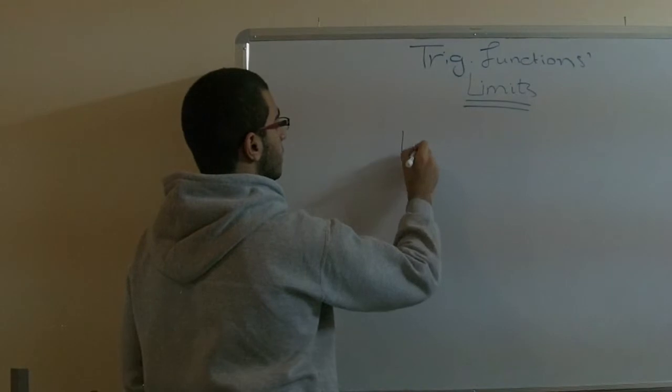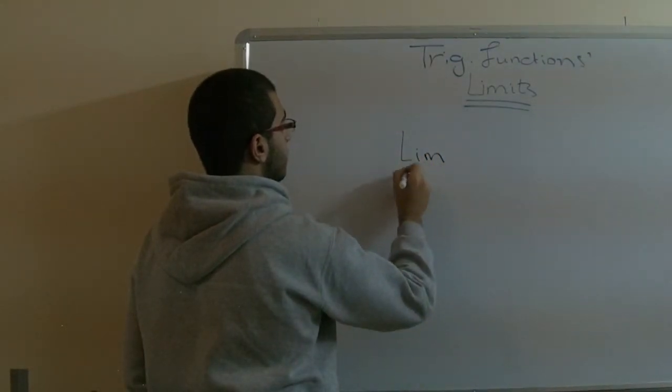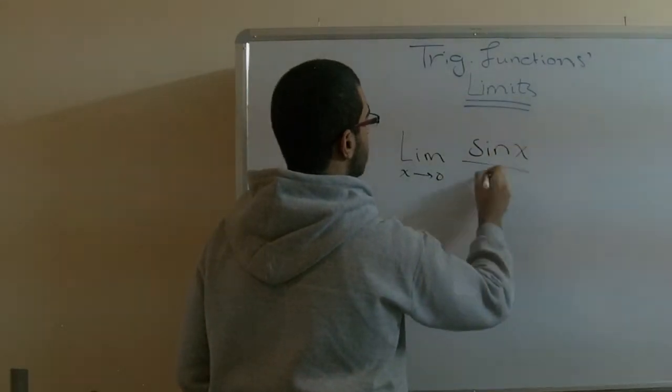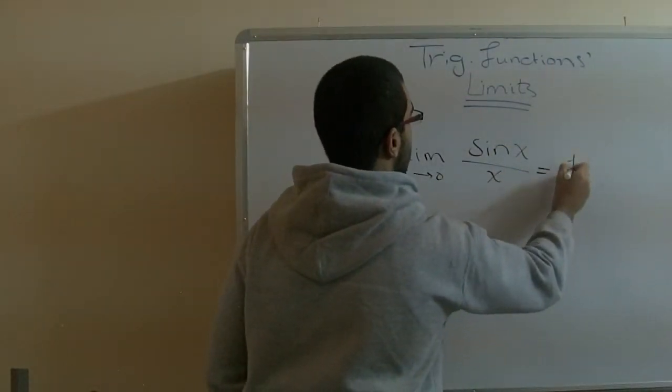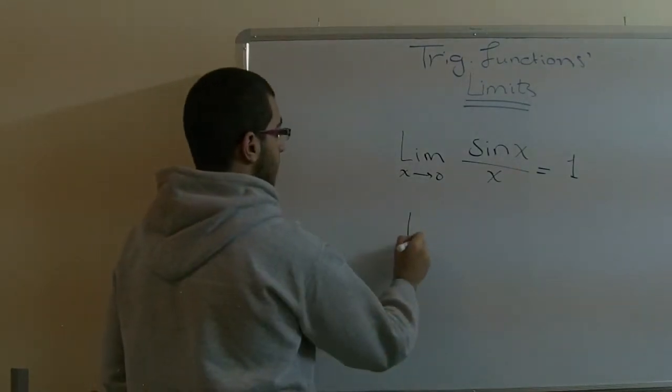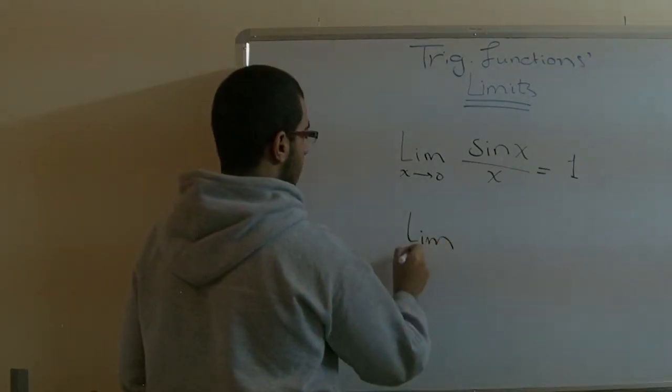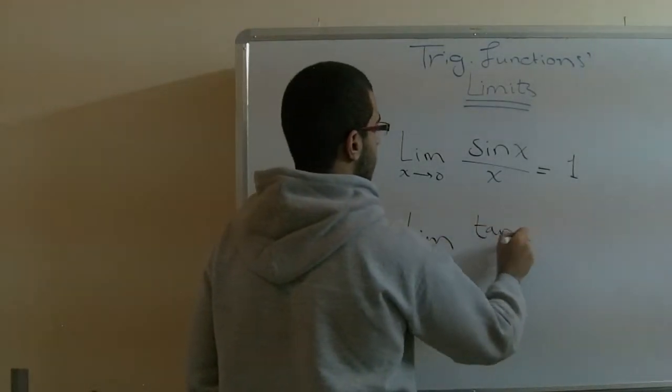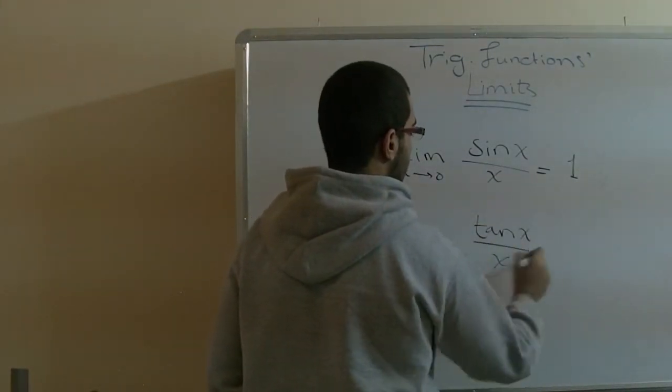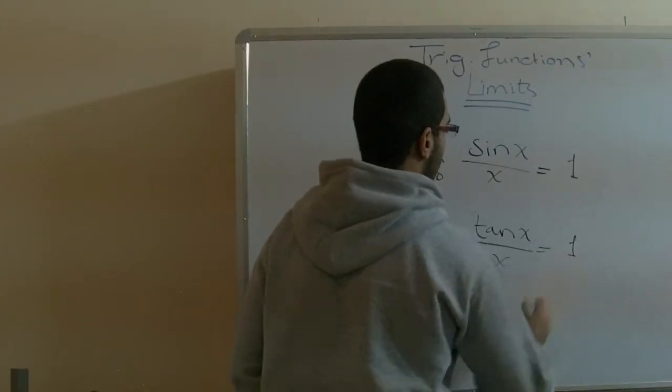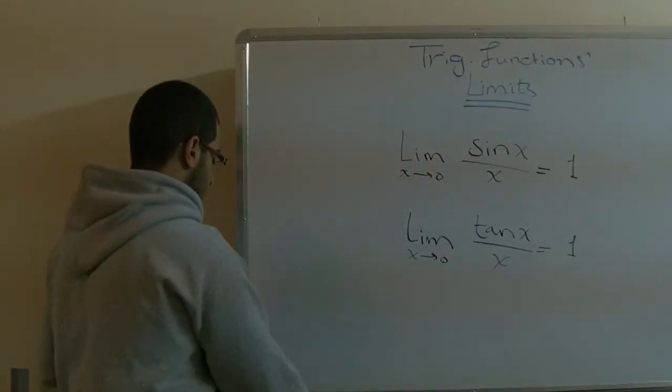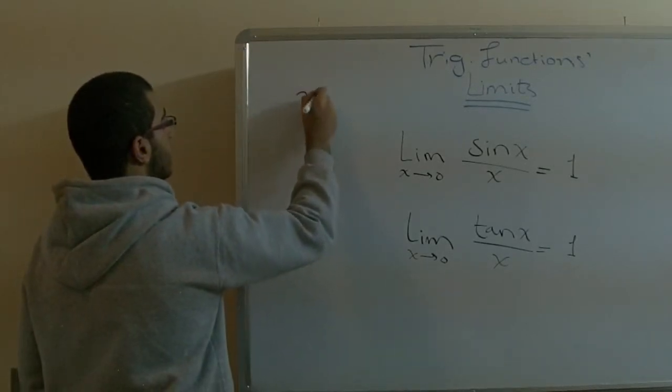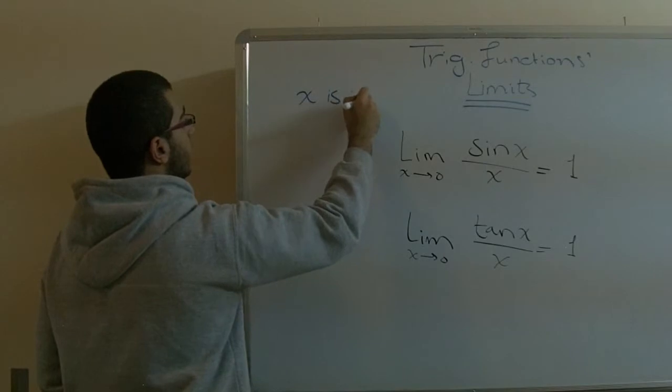The first rule is: the limit of x approaching zero, sine x over x, gives us 1. And the limit of x approaching zero, tan x over x, also gives us 1. Here is a note that x is in radians.